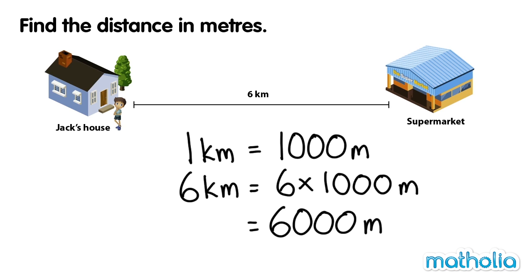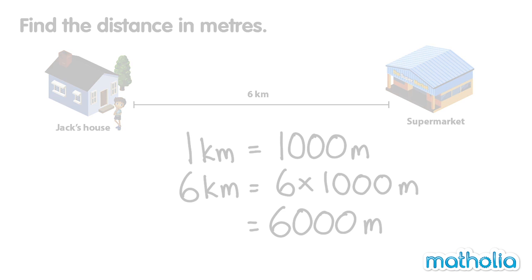So, the distance from Jack's house to the supermarket is 6000 metres. 6 kilometres equals 6000 metres.